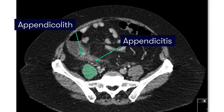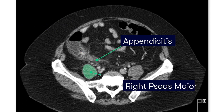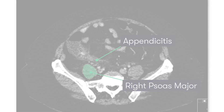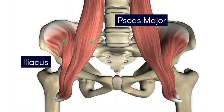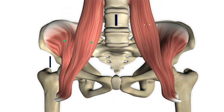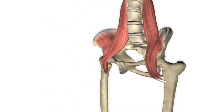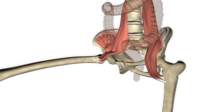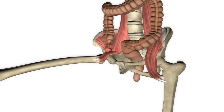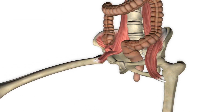Interestingly, we can also see the psoas major muscle lying posterior to the appendicitis, which helps us appreciate the psoas sign — how by moving this muscle through extension of the right hip, it would irritate the overlying appendix and cause the patient to experience pain.